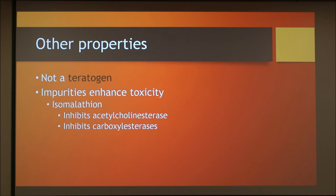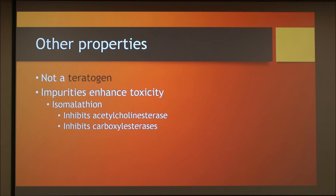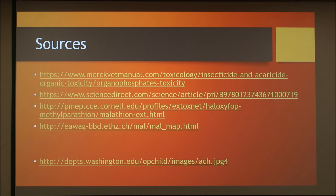To conclude, here are some other interesting properties of malathion. It is not a teratogen, which means that it will not negatively affect the fetus or embryo. Furthermore, if the malathion is not pure, it will be much more toxic. An impure form of malathion, called isomalathion, is much more toxic to mammals because it not only inhibits acetylcholinesterase, but it also inhibits the carboxyl esterases — the degradative enzymes that break malathion down into its less toxic forms. In summary, the organophosphate insecticide malathion exhibits selective toxicity due to the metabolic differences between insects and mammals.